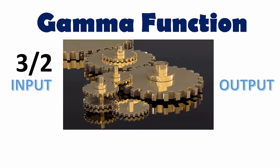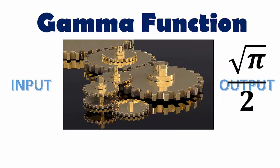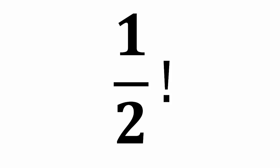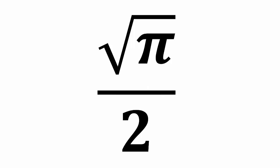So let's do that. Plug in 3 halves into gamma function and doing some calculus gets us square root of pi over 2. So 1 half factorial is square root of pi over 2.